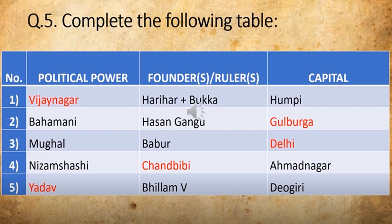The political powers are: Vijayanagar, Bahamani, Mughal, Nizamshahi, and Gyado. The second column is Founders or Rulers, and the third one is Capitals. Now if the question is asked — the question can be asked like: Political power — Vijayanagar — and you will have to pick the correct founder. You will get options like: Hariyar and Bukka, Hasan Gangu, and Babur.